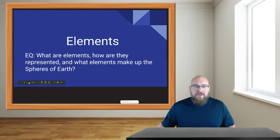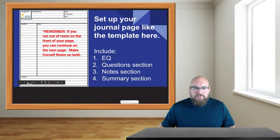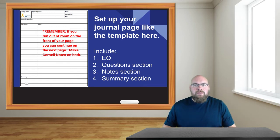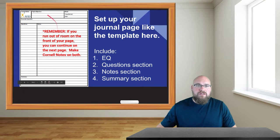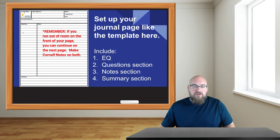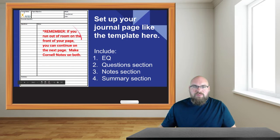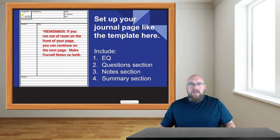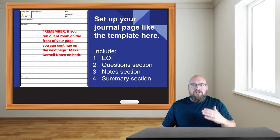Please write your EQ at the top of your notes page in your journal. Your notes should be behind your unit page — the one we decorated as our title page for the unit. Set up Cornell style notes: include an EQ section at the top, a question section about two to three fingers wide from the spine, your notes as the largest section, and a summary at the bottom. If you run out of room, continue on the next page using the same Cornell note pattern.